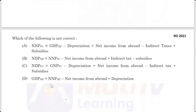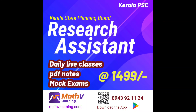And last, (D) GDP at market price equals NNP at market price minus net income from abroad plus depreciation — and this is not correct. The label should be NDP at factor cost, not NNP at factor cost.